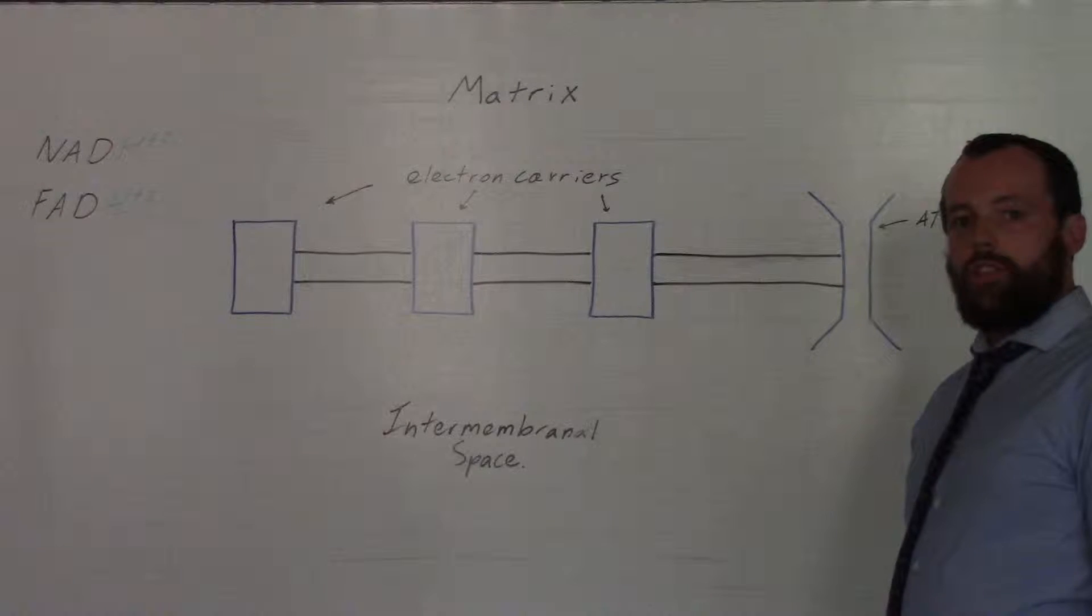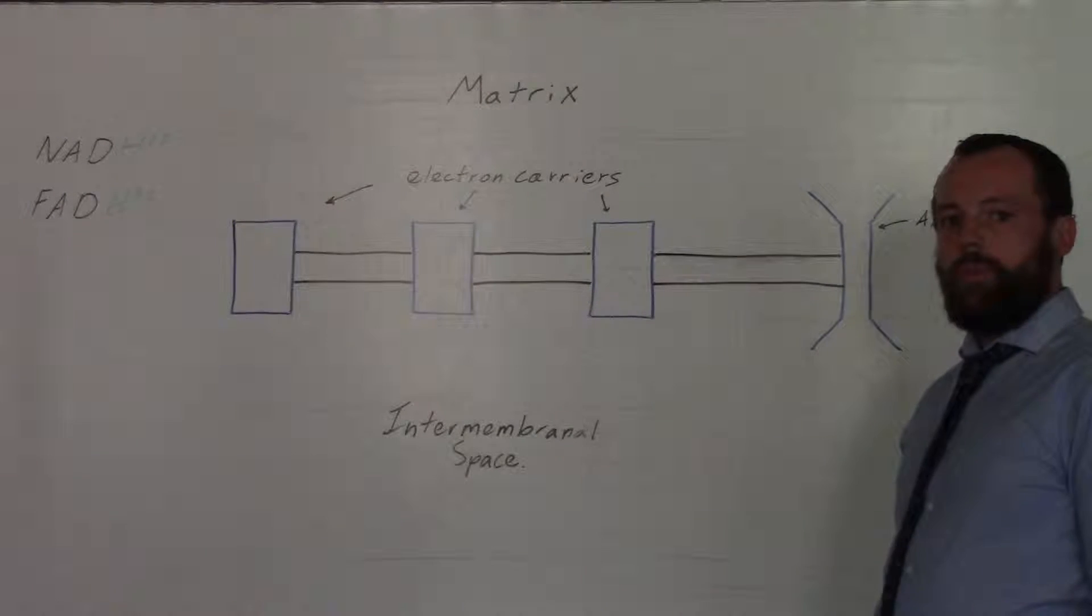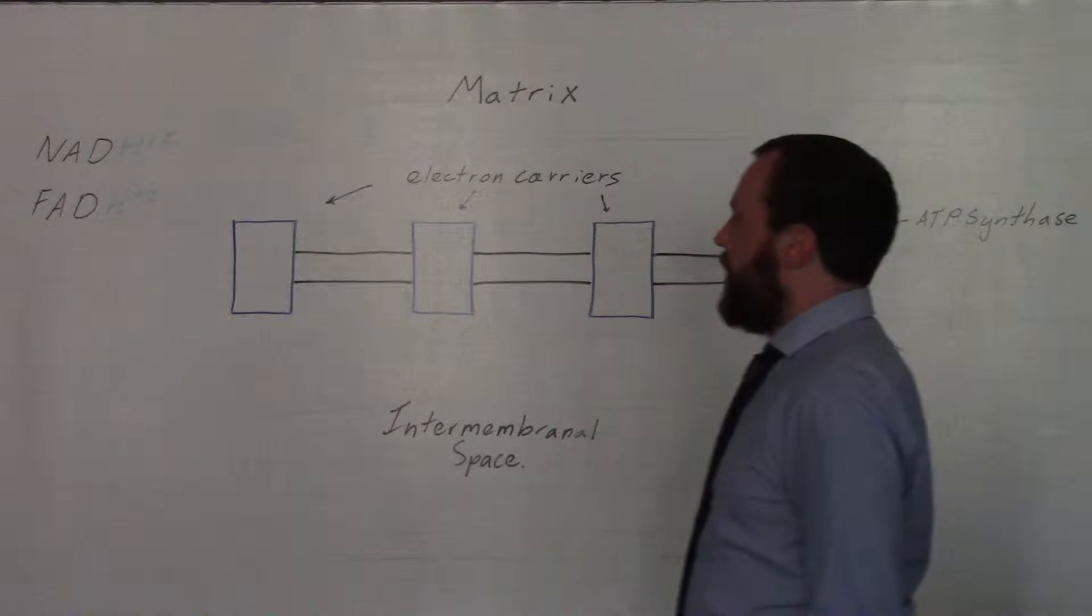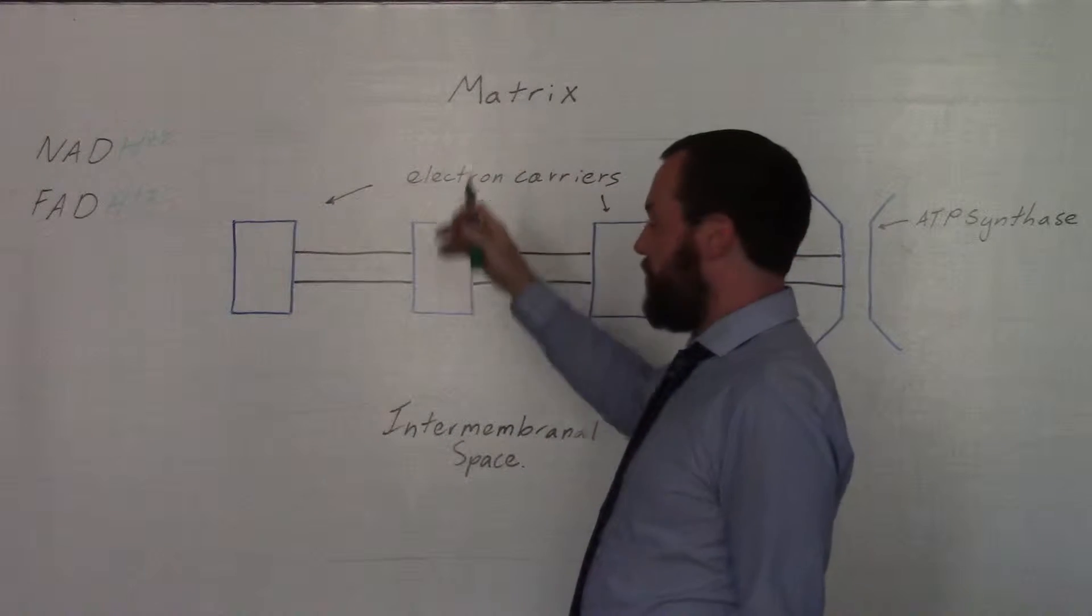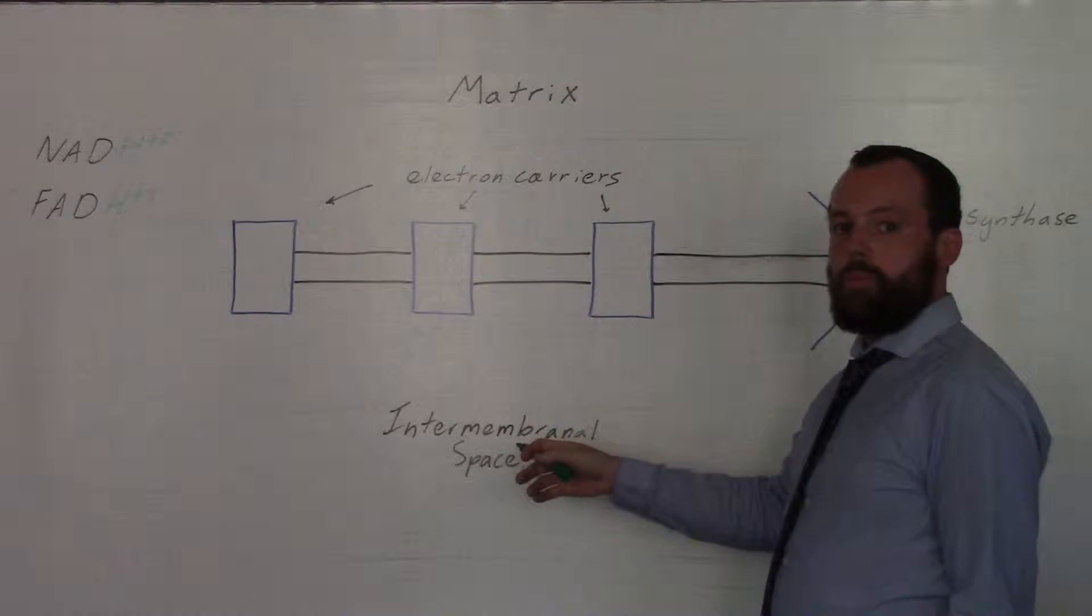This video is looking at the last stage of respiration, the electron transport chain, and how it's used to produce large quantities of ATP. This is happening in the matrix of the mitochondria and occurs over the intermembranal space.